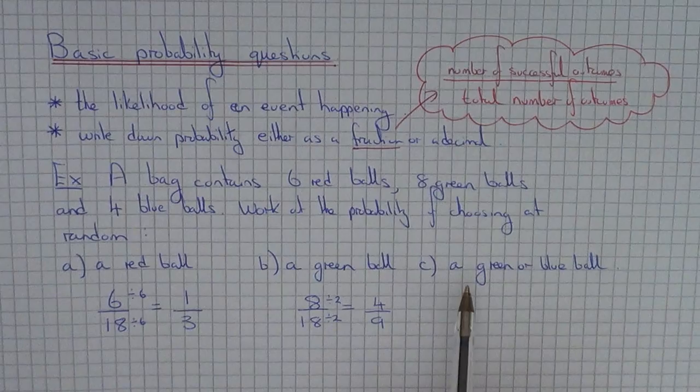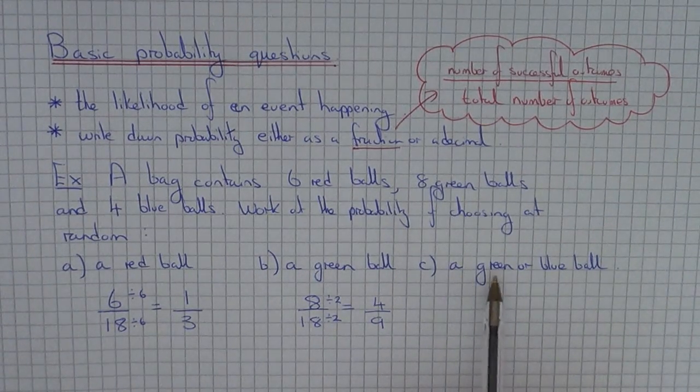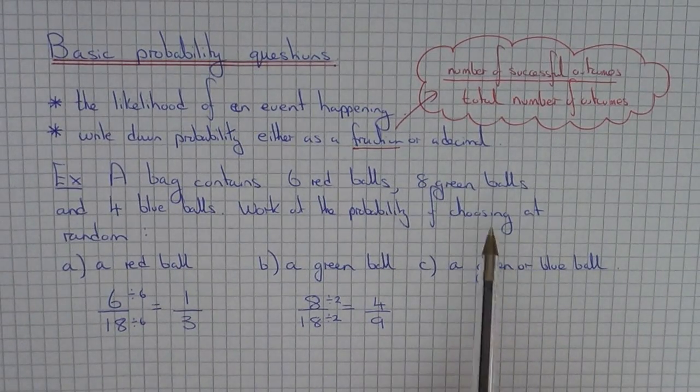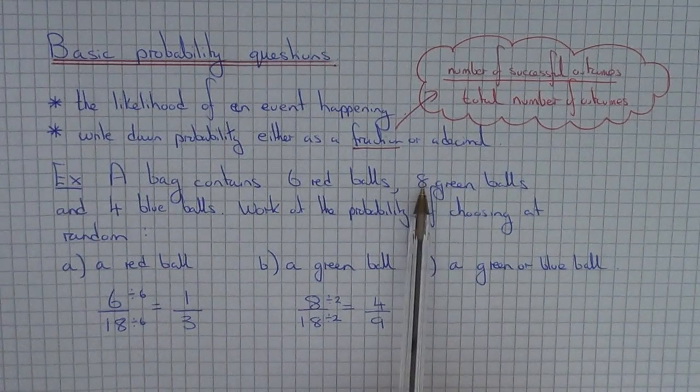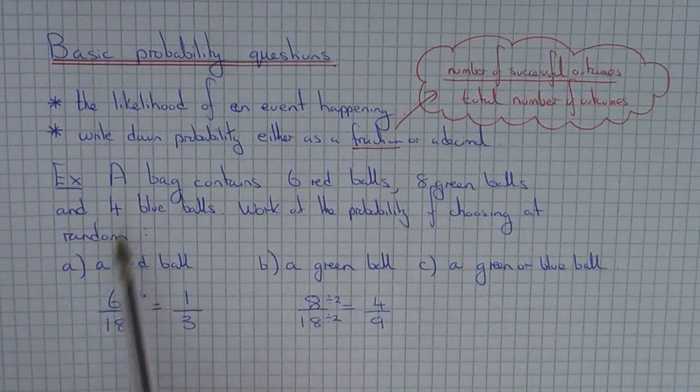The final question is a little bit trickier to do because this time we need to work out the probability of choosing a green or a blue ball. So on the numerator we need the amount of green and blue balls in the bag. There are 8 green balls and 4 blue balls. So 8 add 4 is 12.